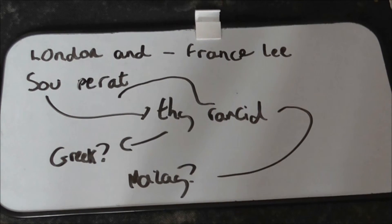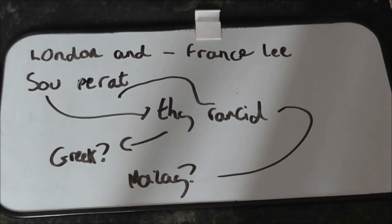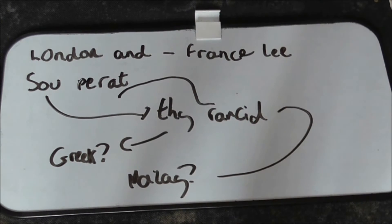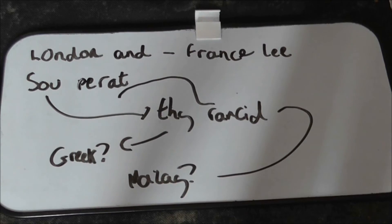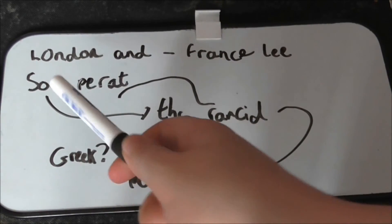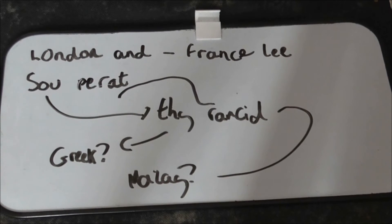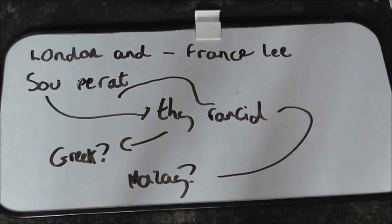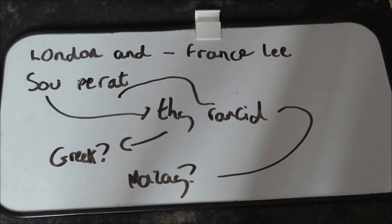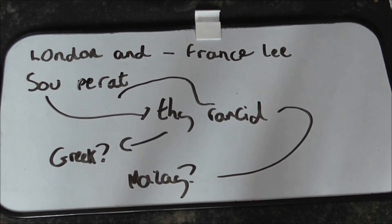So those are the three names on today's title card: London and Francely, Sue Peret — or London and Francely, Thy Rancid. Interesting titles. But if you believe that means something else completely, do comment below. It'll be amazing to hear what you think these names could possibly mean. It's always an open discussion and it'd be great to know your theories. But nonetheless, that is what we decoded today.